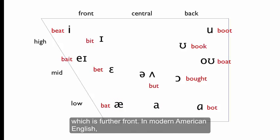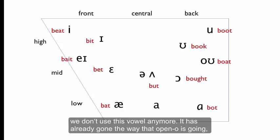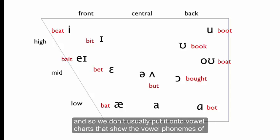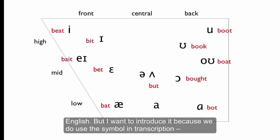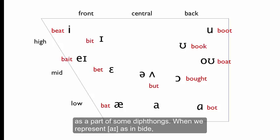In modern American English, we don't use this vowel anymore. It's already gone the way that open O is going. So we don't usually put it onto vowel charts that show the vowel phonemes of English. But I want to introduce it because we do use the symbol in transcription as a part of some diphthongs.